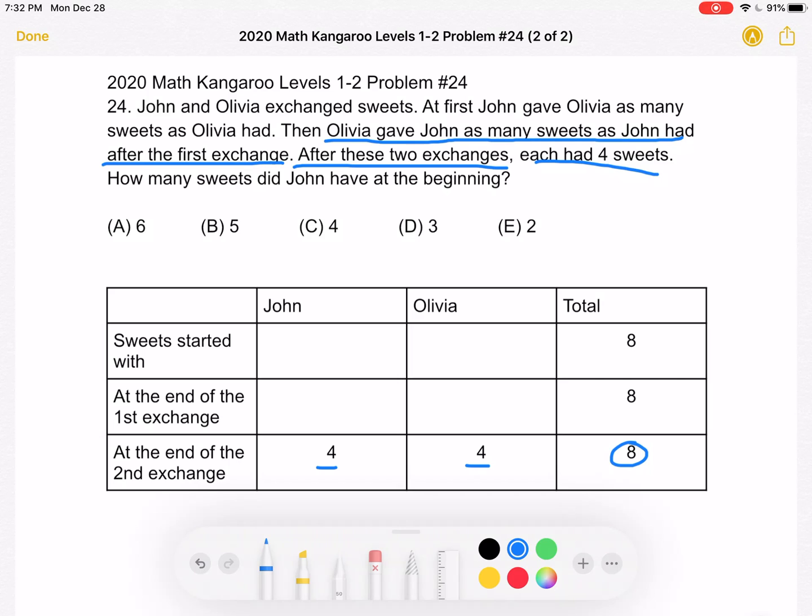So if the result of the second exchange having a total of four is double the amount that John ended the first exchange with, he must have ended the first exchange with two candies because two times two is equal to four. And again, we still have a total of eight sweets. So Olivia must have six at the end of the first exchange.